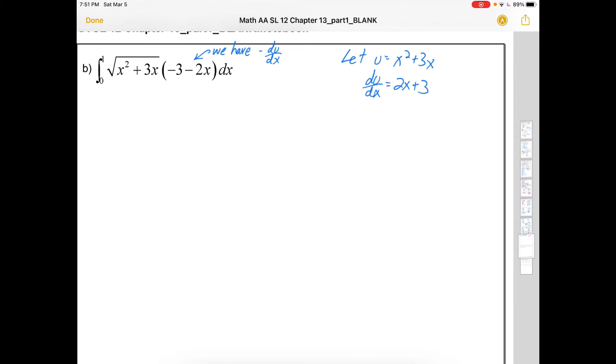The other thing we need to change is the boundary. So we've got boundaries of x equals 1 and x equals 0. When x is 1, u is going to be 1 squared plus 3 times 1 because u is x squared plus 3x. So u will be 4. When x is 0, u will be 0 squared plus 3 times 0 or it will still be 0. So it's possible they'll be the same. It's just not a guarantee.